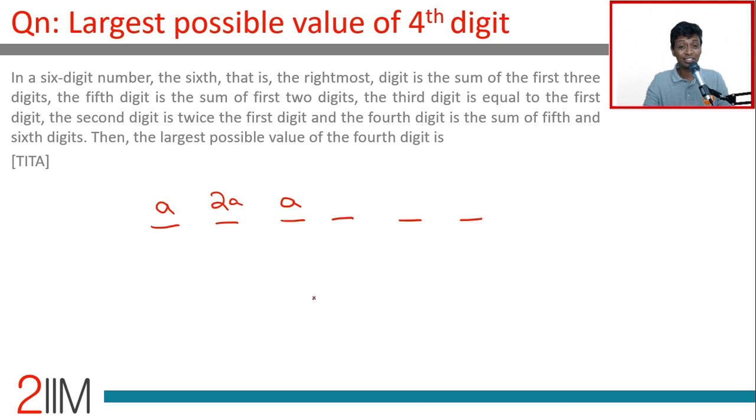The sixth digit is the sum of the first three digits, which is 4a. The fifth digit is the sum of the first two digits, which is 3a. The fourth digit is the sum of the fifth and sixth digits.